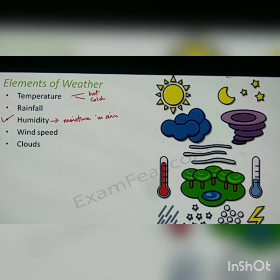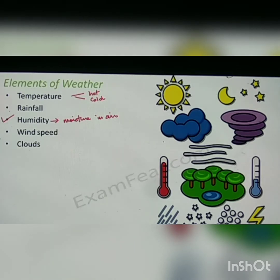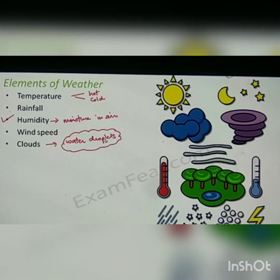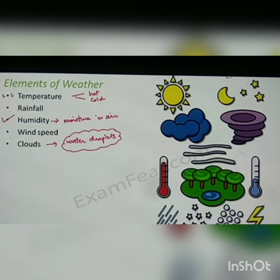The next element is clouds. Clouds are collections of tiny water droplets or tiny ice crystals that accumulate in the atmosphere. When there is too much accumulation, they fall as rain — this is called precipitation. These droplets are very small and light, which is why they float in air and form clouds. The presence of clouds means the weather is cloudy. Gradually, water droplets accumulate, and when there is too much accumulation, they fall as rain.